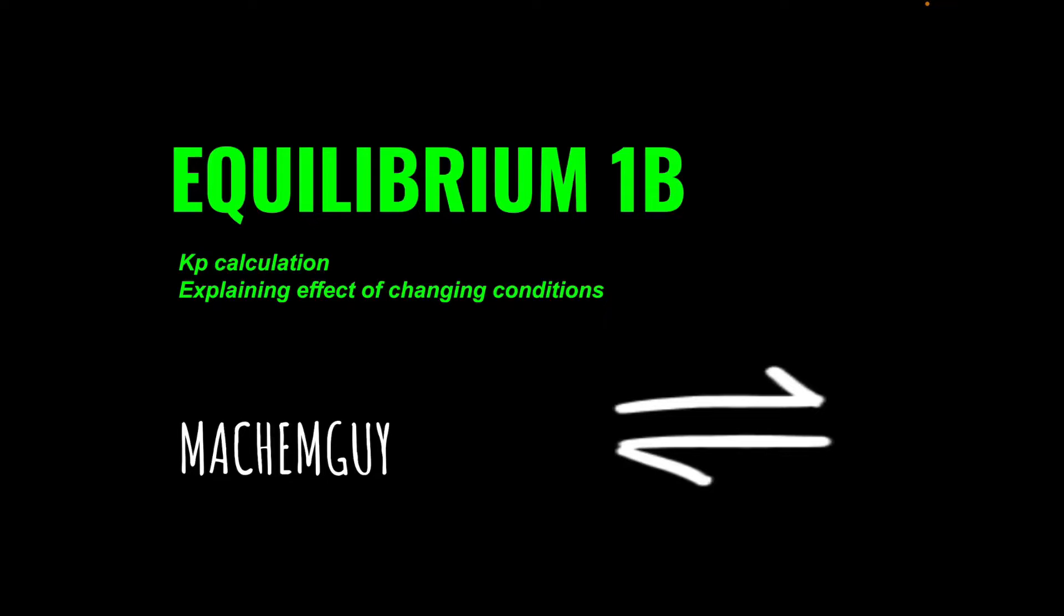Got another question for the equilibrium topic. This one covers a Kp calculation and explaining the effects of changing various conditions on an equilibrium. As always, the link to the questions is in the description if you want to try it first.